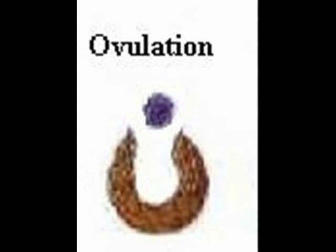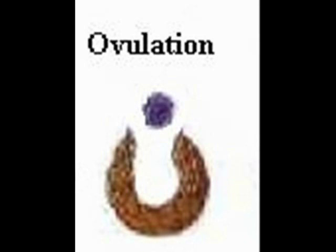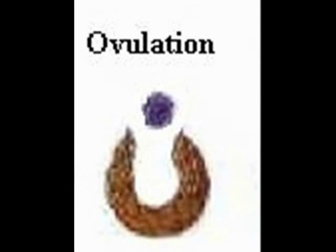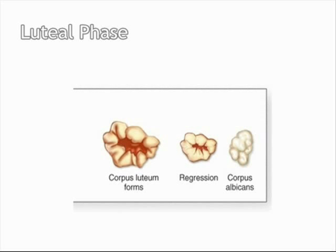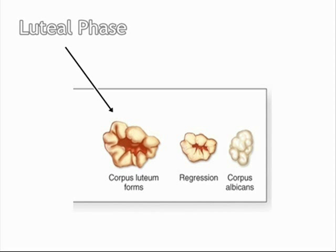The follicular phase ends at this stage and the luteal phase begins. As soon as the follicle ruptures and releases the ovum, the cells of the follicle itself undergo certain changes: fat globules get deposited in them, they grow larger, and they assume a yellowish color. These cells are called luteal cells, and the follicle now forms the corpus luteum.